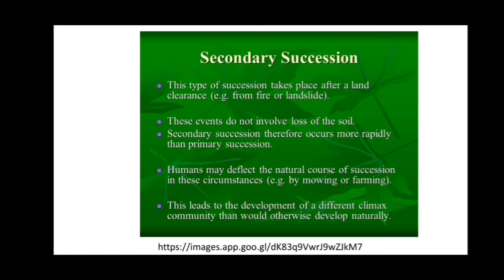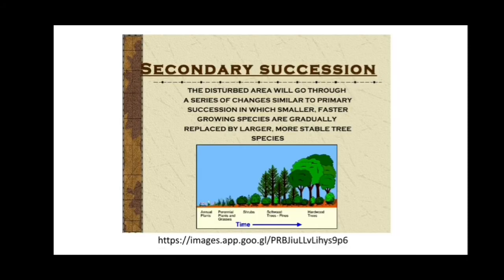Secondary succession does not involve the loss of soil — soil still exists — so it occurs more rapidly than primary succession. Humans may deflect the natural course of succession through activities like farming, leading to a different climax community than would otherwise develop naturally. In a disturbed area, smaller and faster-growing species are gradually replaced by larger and more stable tree species.